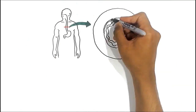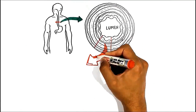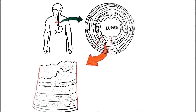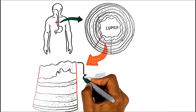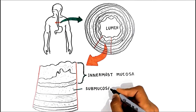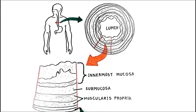Looking at a cross-section of the esophagus, its wall is composed of four layers: the innermost mucosa, submucosa, muscularis propria, and adventitia. Unlike the remainder of the gastrointestinal tract, the esophagus has no serosa.